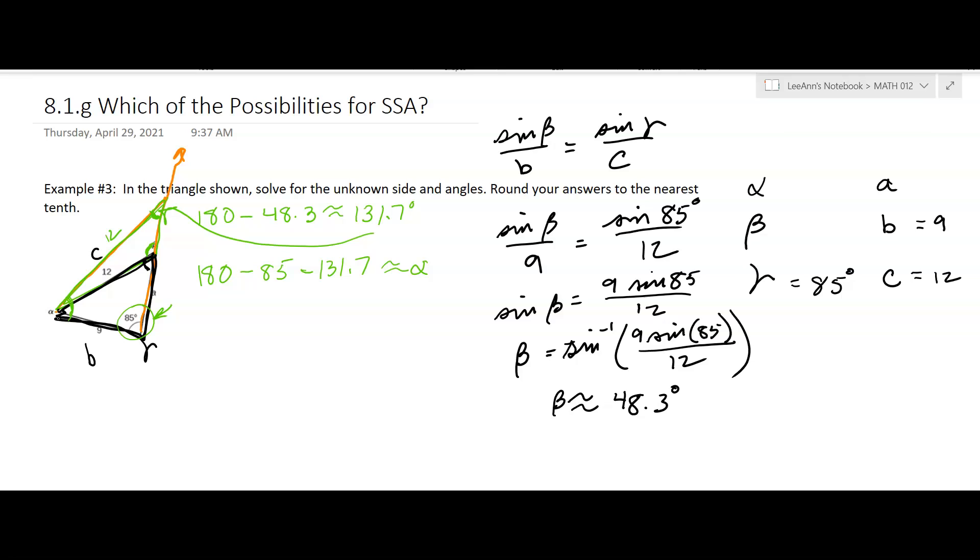But you might have one where it didn't look that obvious, and so how do you figure it out? Well, if you get an angle and the two angles that you have add up to be more than 180, then you can't have that because you've got to have a third angle. Okay, so this isn't going to work.